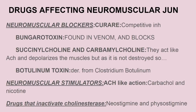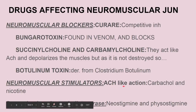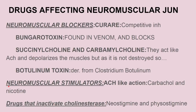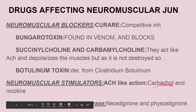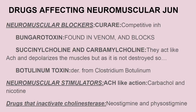Now the neuromuscular stimulators: drugs that act like acetylcholine — these are carbacol and nicotine. These drugs are either not destroyed or destroyed very slowly by the enzyme cholinesterase. As because these acetylcholine-like drugs are not destroyed by the enzymes, they cause repeated stimulation and continuous action of the muscle, causing muscle spasm. Next are drugs that inactivate the cholinesterase enzyme so the destruction of ACh doesn't occur — mainly neostigmine and physostigmine. These two drugs stimulate the neuromuscular junction by inactivating the enzyme acetylcholinesterase.